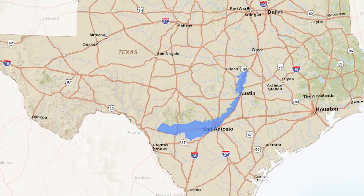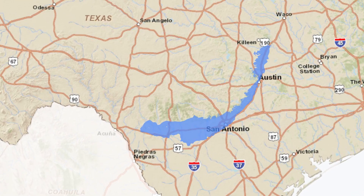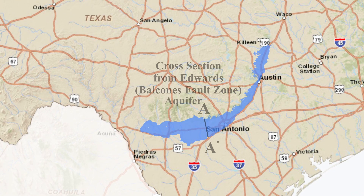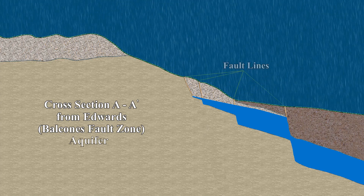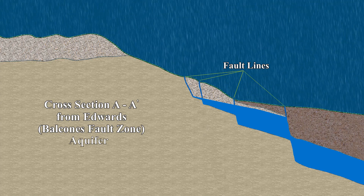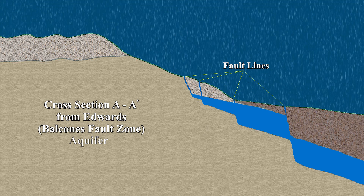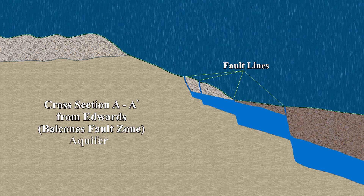Being on a fault zone, the karst limestone of the Edwards Aquifer is highly fractured. Rainwater seeps very quickly into the Edwards Aquifer through the fault lines, even while a storm event is happening. Not all limestone aquifers in Texas recharge this quickly.